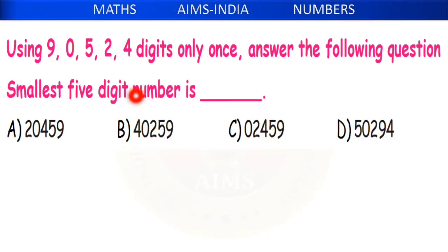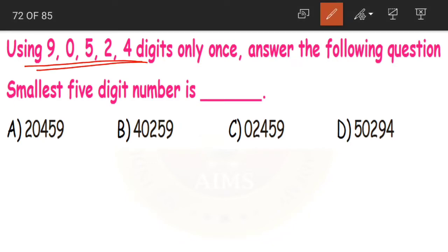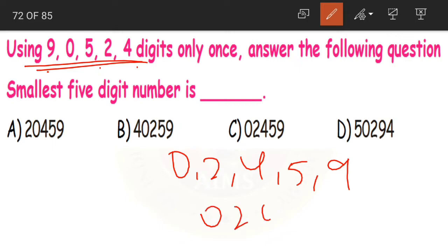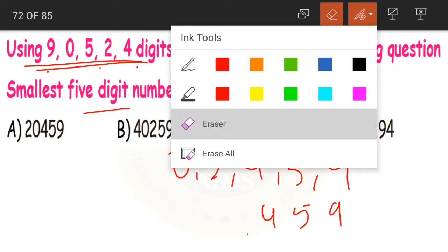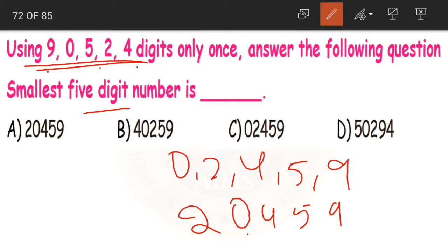Next: using the digits 9, 0, 5, 2, 4 only once, find the smallest 5-digit number. Arrange digits in ascending order: 0, 2, 4, 5, 9. But 02459 is not a 5-digit number — 0 in the first place makes it a 4-digit number. So switch the first two places: 2, 0, 4, 5, 9. 20,459 becomes our smallest 5-digit number — that is option A.